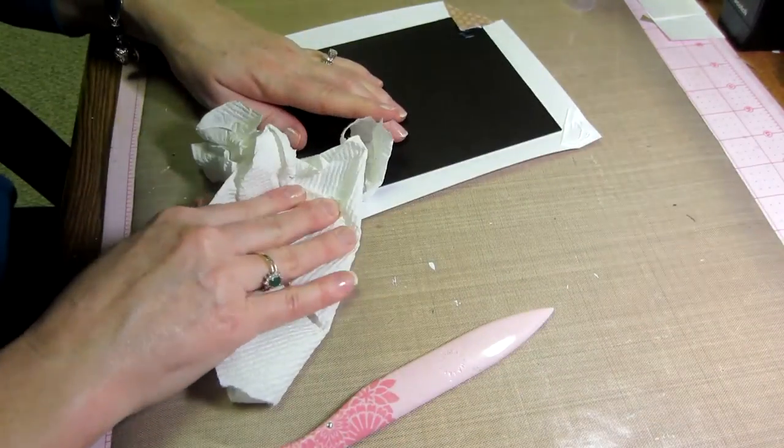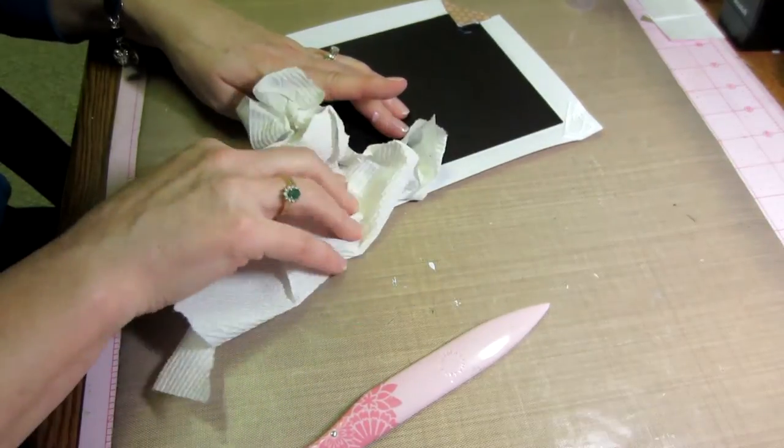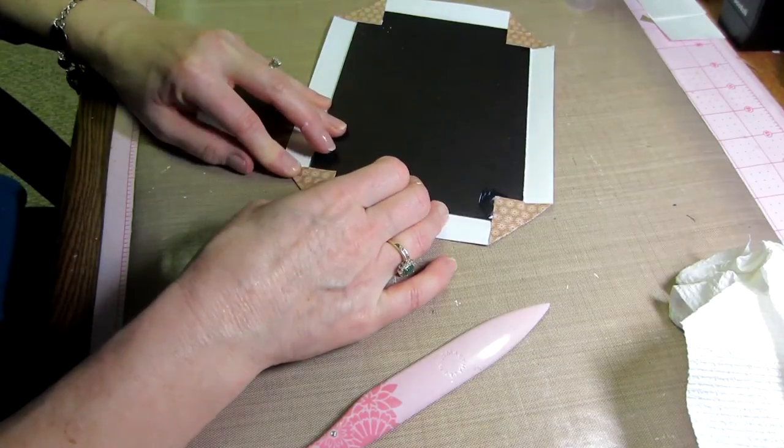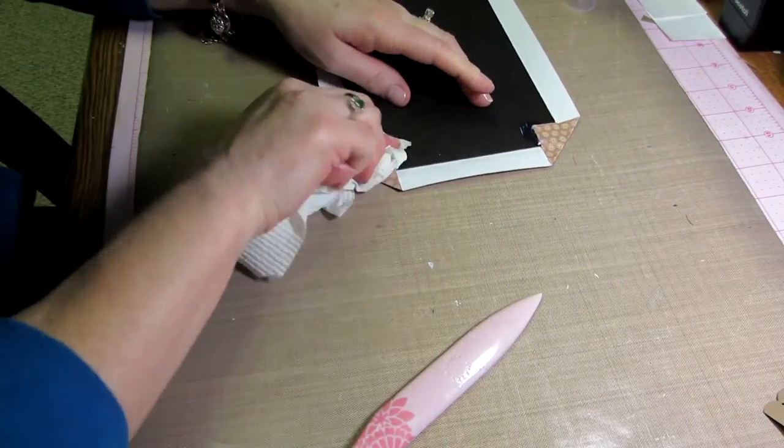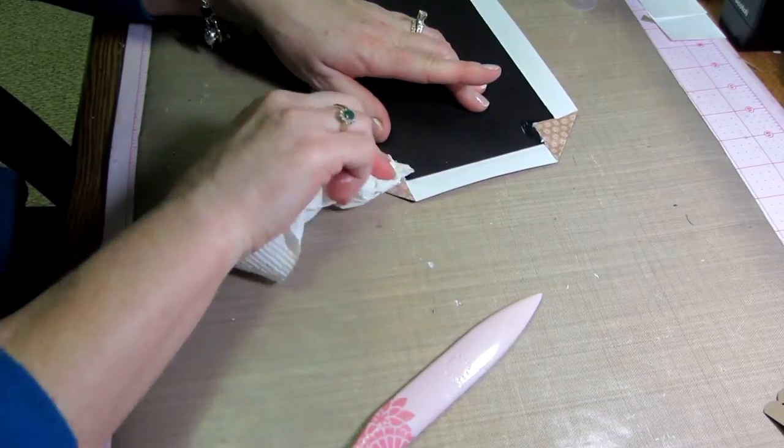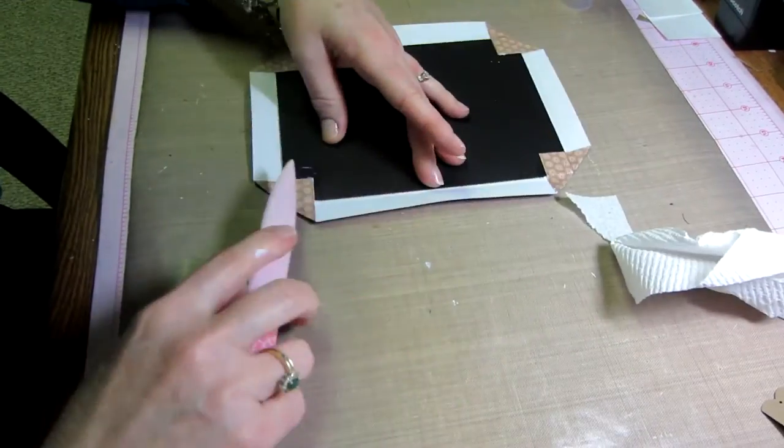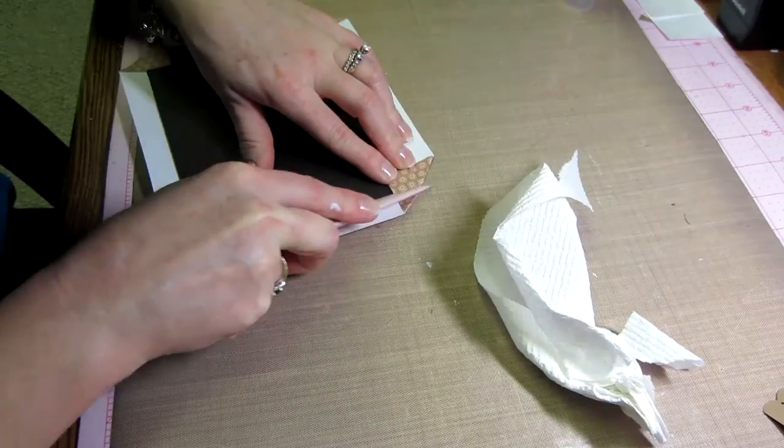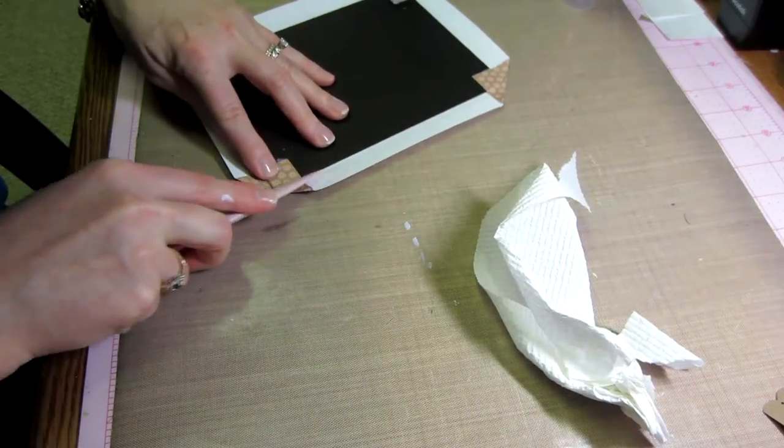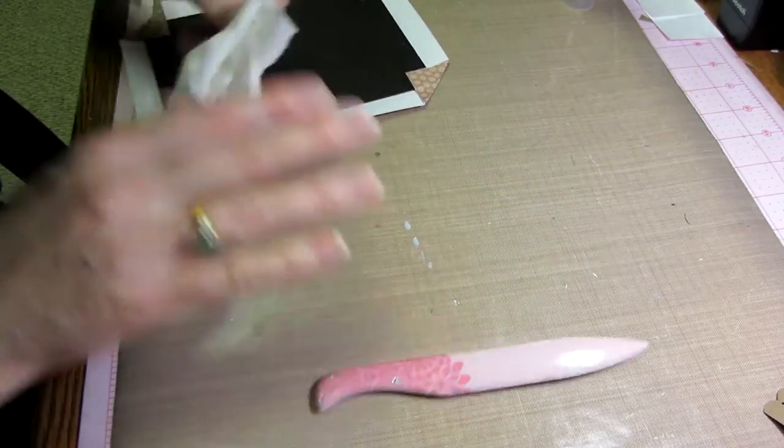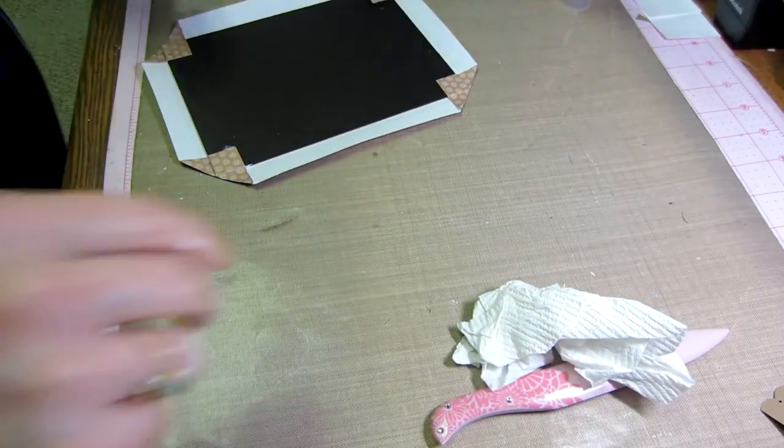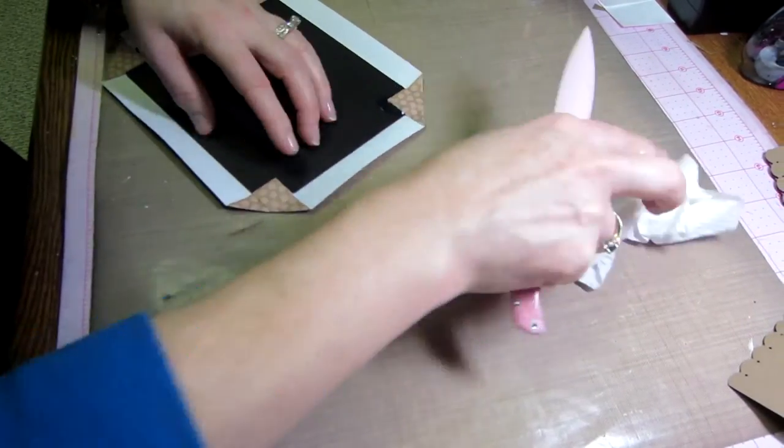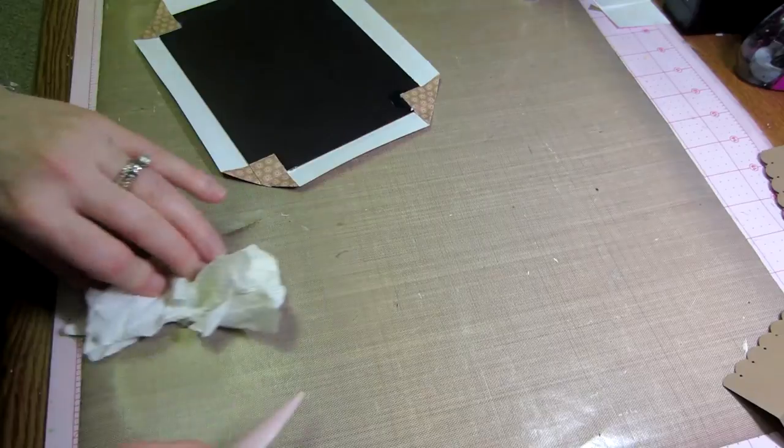Glue that down, make it straight, push down, squeeze that glue out and then kind of smush that into there nice and tight. That definitely takes a minute for the wet glue to dry. Be patient, be a little more patient than I am. Patience is not one of my virtues.